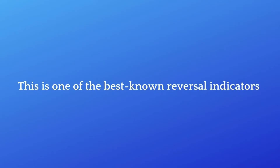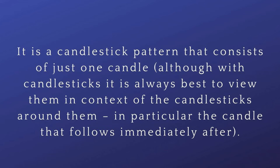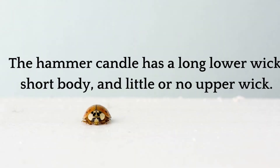The hammer is one of the best known reversal candlestick indicators. It is a candlestick that consists of just one candle, although it is always best to view it in context of the candlesticks around it — in particular, the candle that follows immediately after. The hammer candle has a long lower wick, a short body, and little or no upper wick.